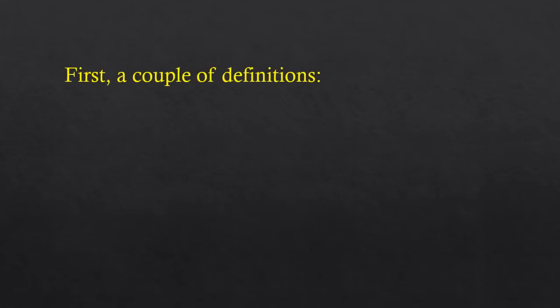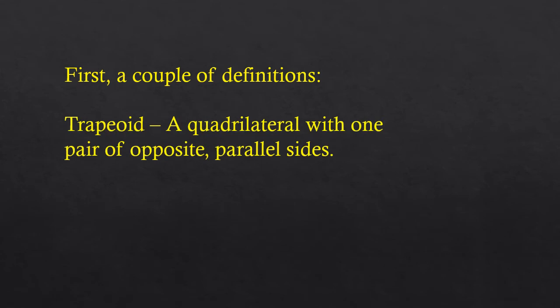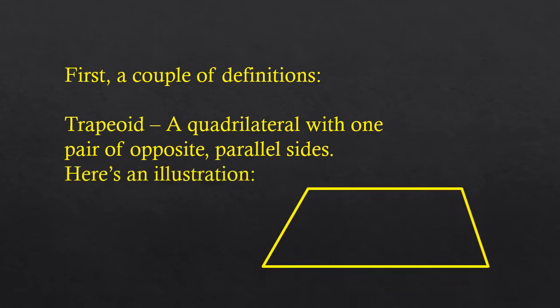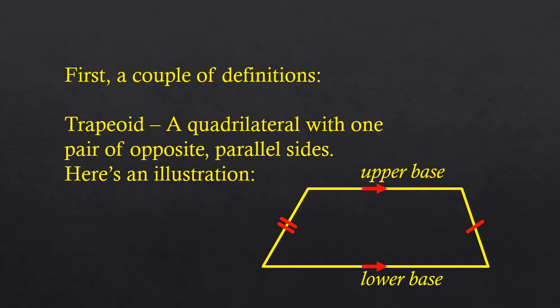First, let's define a couple of things. A trapezoid is a quadrilateral — a four-sided polygon — with one pair of opposite sides that are parallel to each other. Those two sides are called the upper and lower base. The other two sides are not necessarily congruent, which is why I have one tick mark on one side and two tick marks on the other. These non-parallel sides are called the legs of the trapezoid.